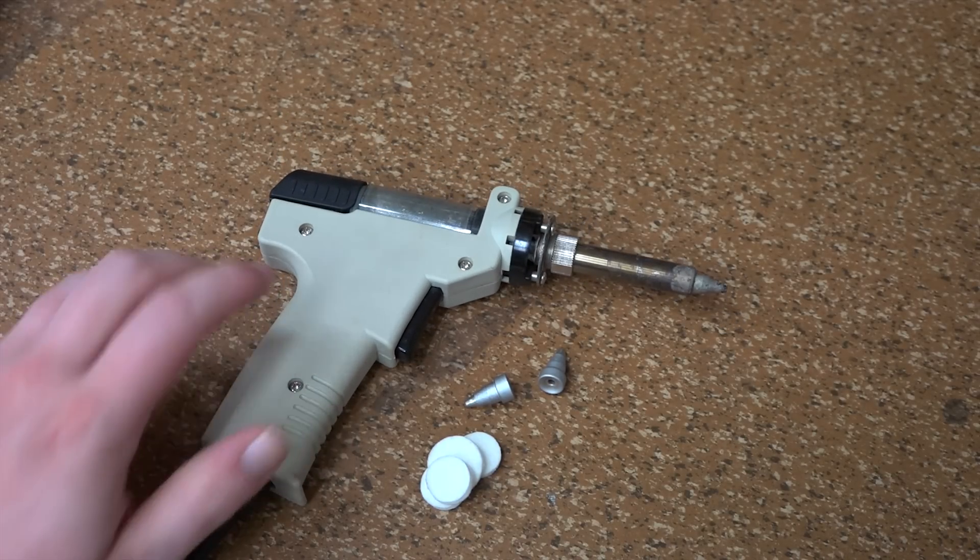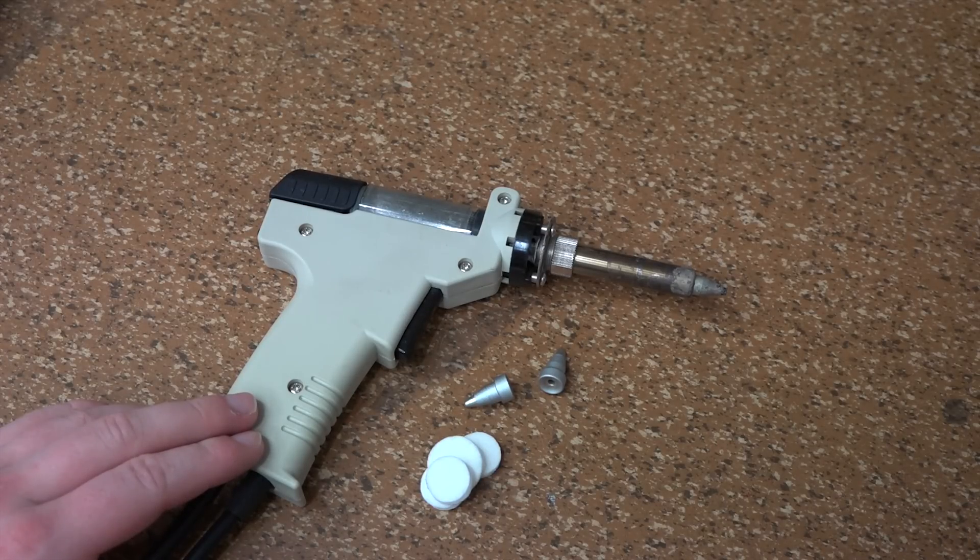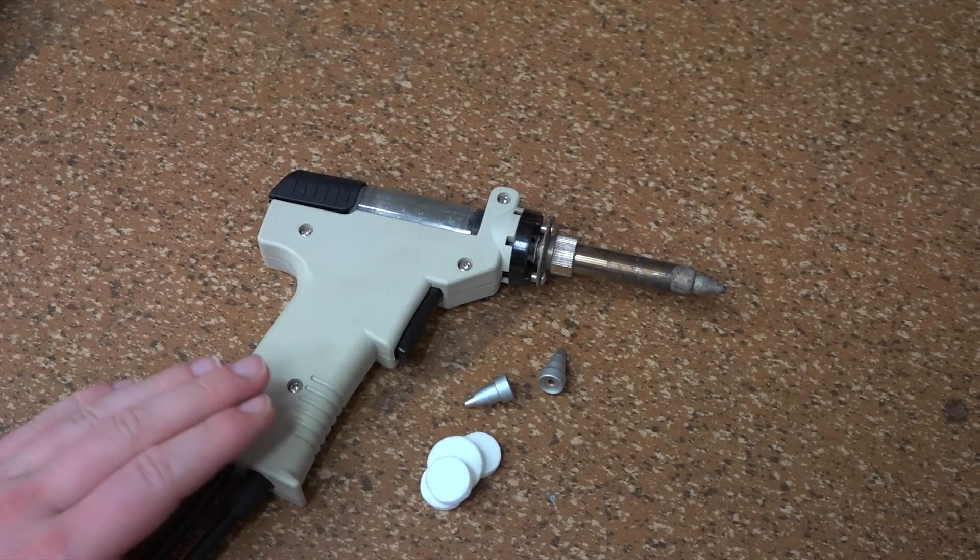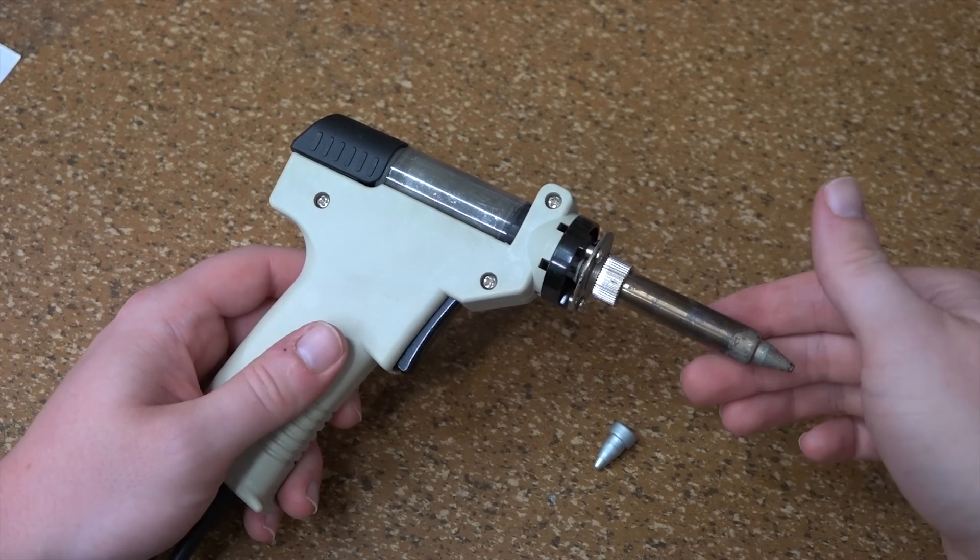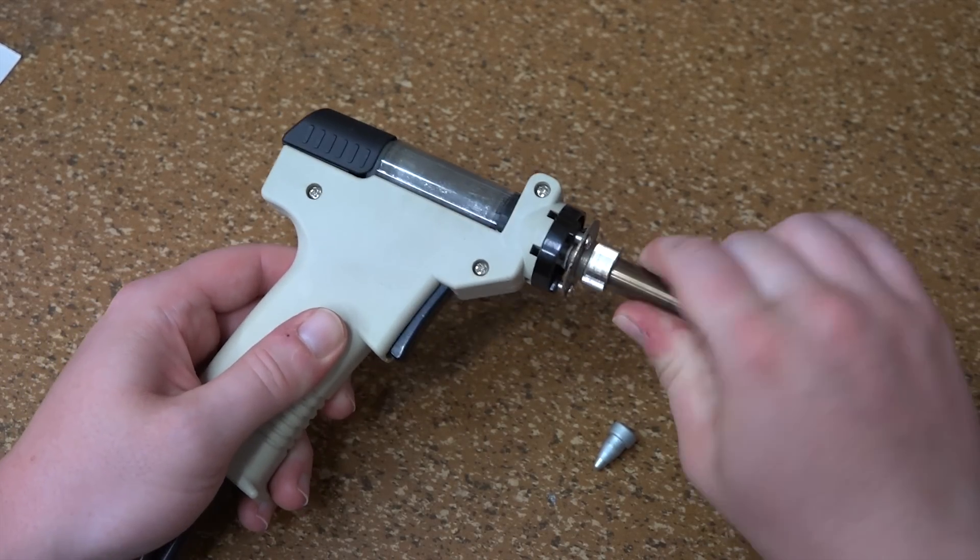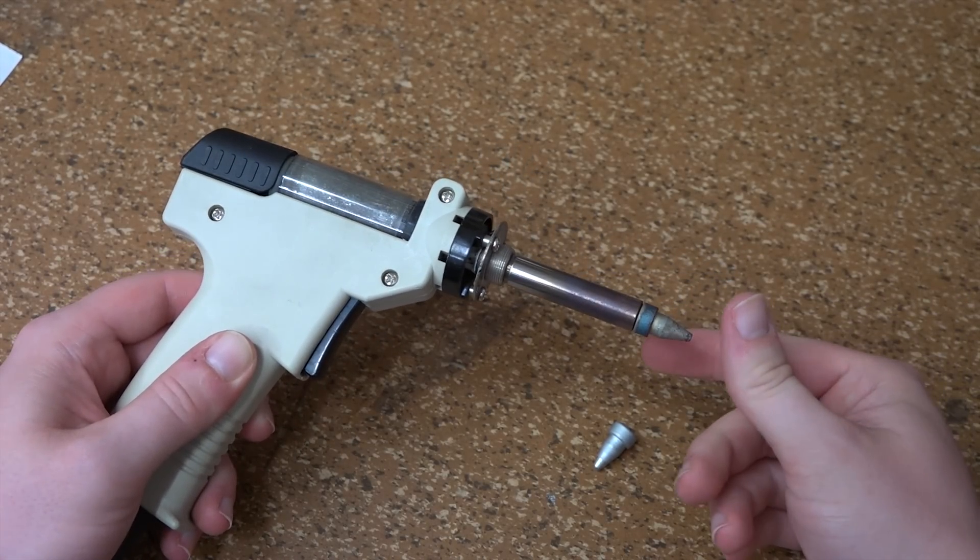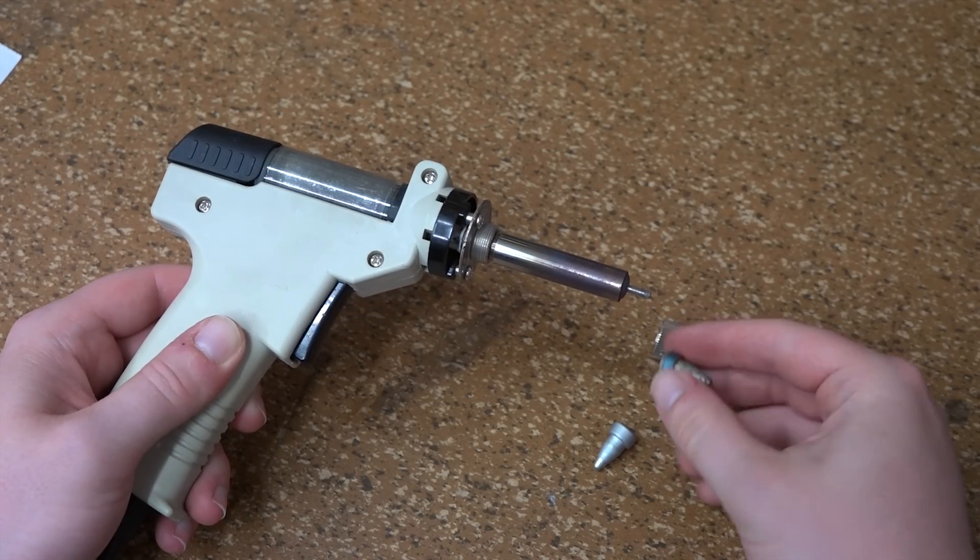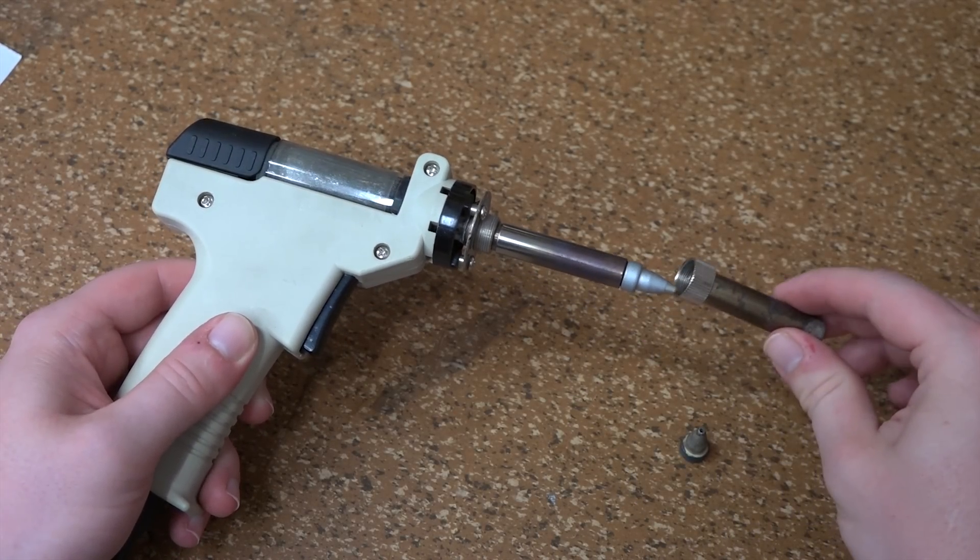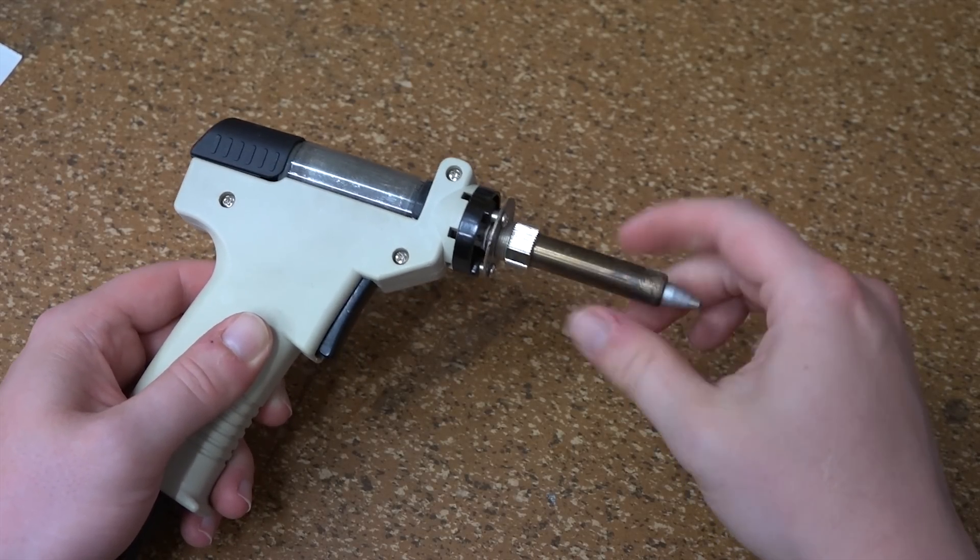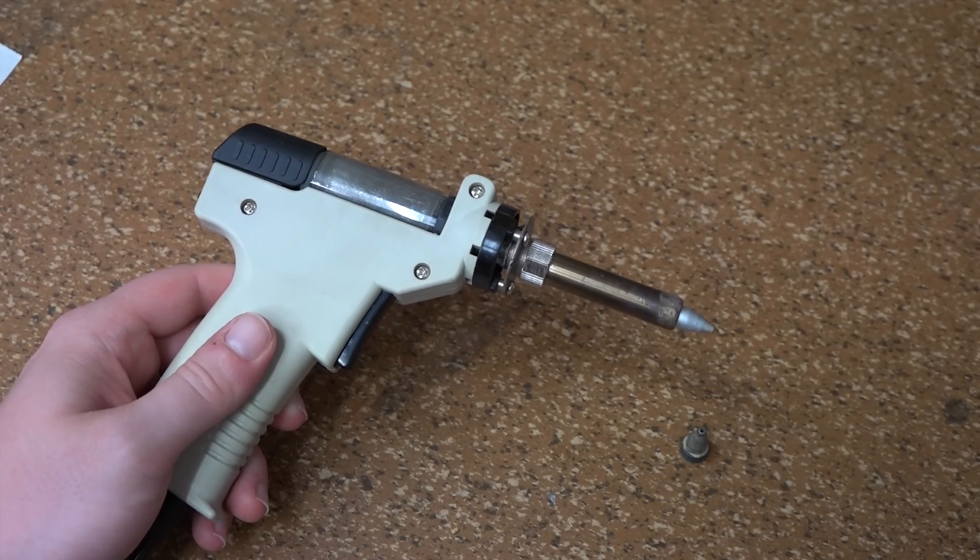So, replacement parts are readily available. Even after two years, they are still readily available. So, no problem there. Replacing the tip is quite easy. You just simply unscrew this front bit like so, and then the old tip just simply pulls off like so, and you can put on the new tip, reinstall the outer sleeve, and there you go.